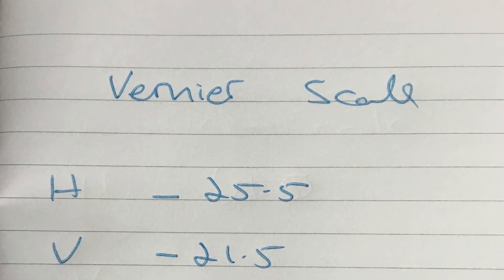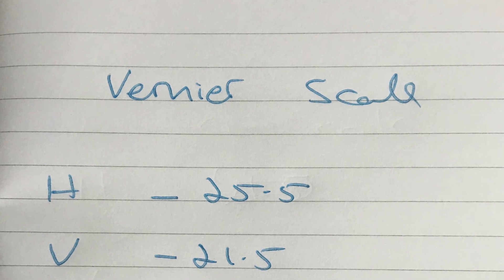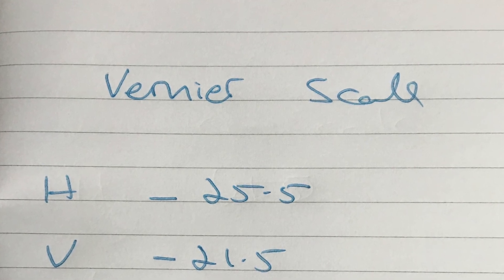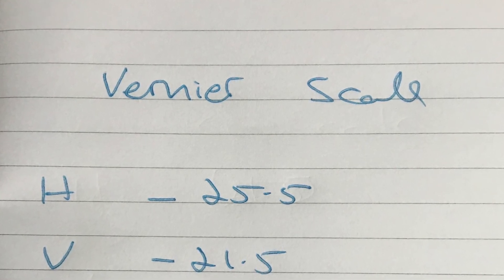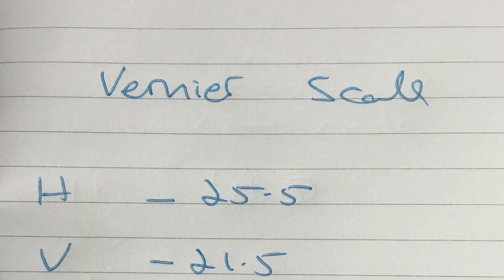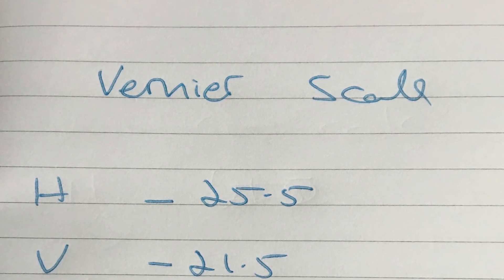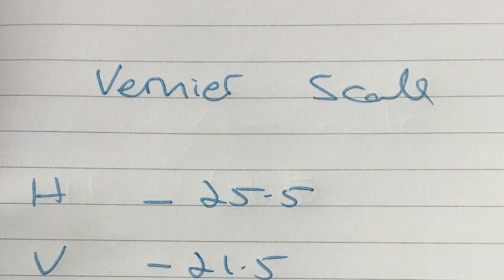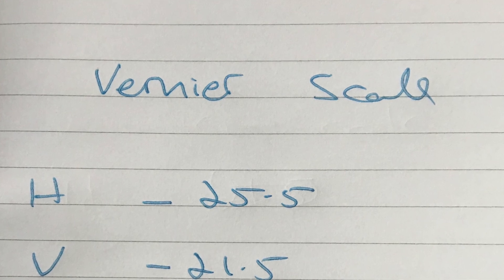So we've got our two readings. So remember, the numbers before the decimal point are from the big scale. The number at the decimal point is always going to be somewhere between zero and nine because it's from the little scale. So try and remember that as well. And good luck.